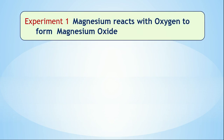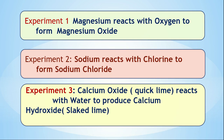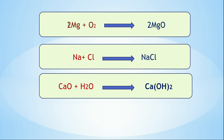Dear students, observe these three examples and tell me what common factors you can find. The three examples are: magnesium reacts with oxygen to form magnesium oxide; sodium reacts with chlorine to form sodium chloride; and calcium oxide reacts with water to produce calcium hydroxide. Observe the chemical equations carefully and try to find the common factors.